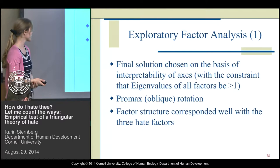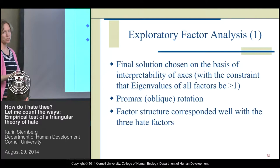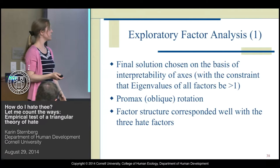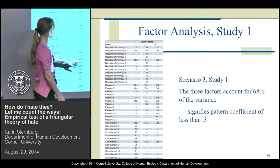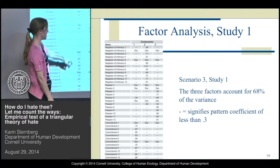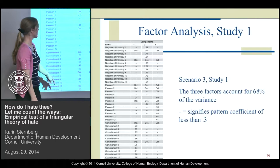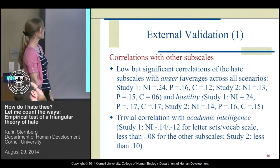I conducted an exploratory factor analysis with an oblique rotation, since I expected the components to be related. The factor structure corresponded well with the three hate components. In both studies, I didn't find any sub-factors — items loaded clearly on three factors. Negation of intimacy clearly loaded on one factor, the same for passion, and for commitment as well, with some minor cross-loadings.